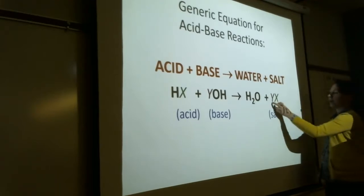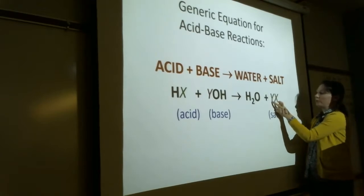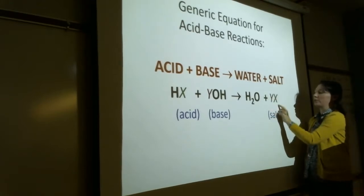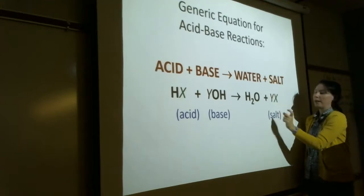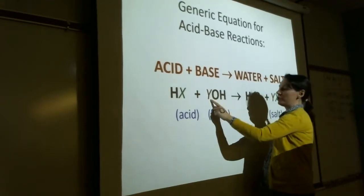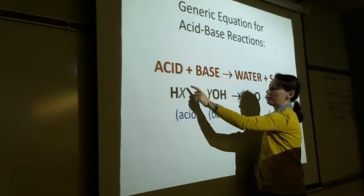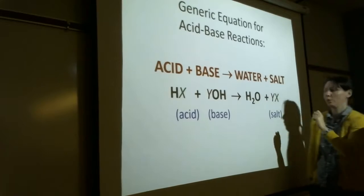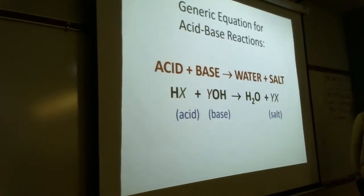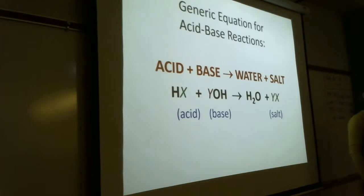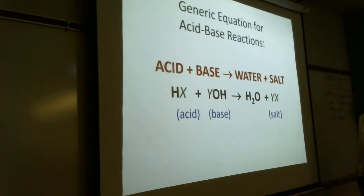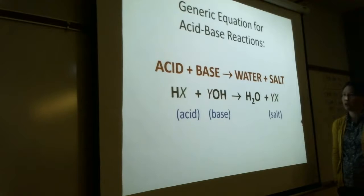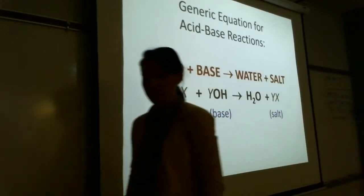Make sure your salt formula is correct, just like we've done all semester. Crisscross your superscripts to become subscripts. If the cation is +2 and the anion is −3, crisscross those when writing your salt formula. Acid plus base makes water and salt. When an acid combines with a base, the two neutralize each other — neutralization occurs, making water and salt.